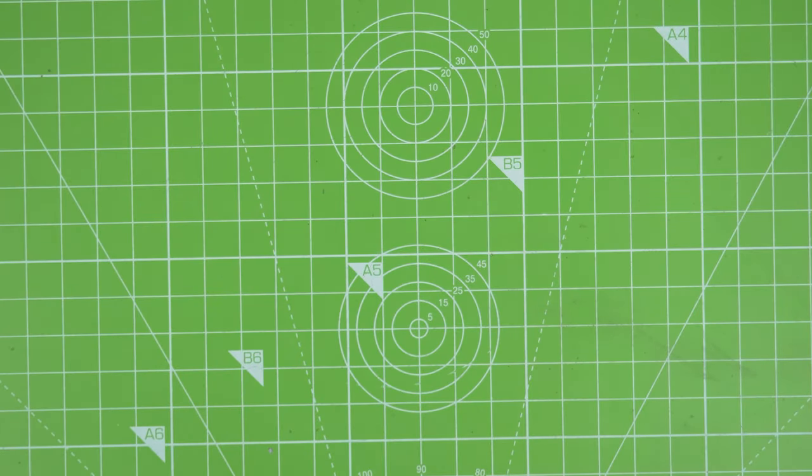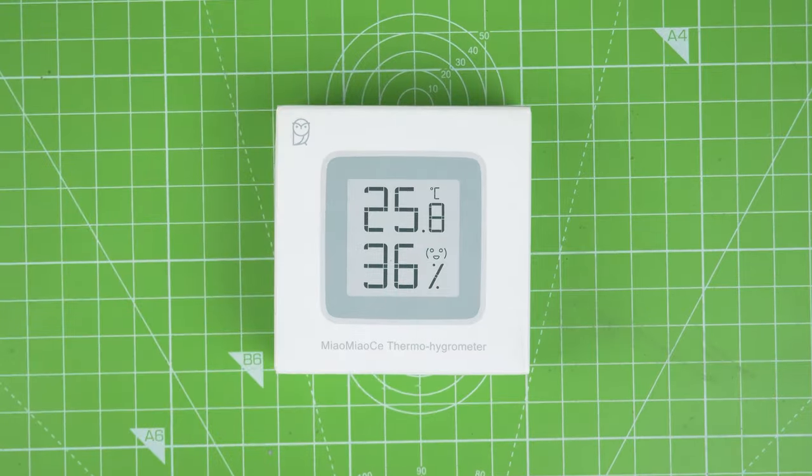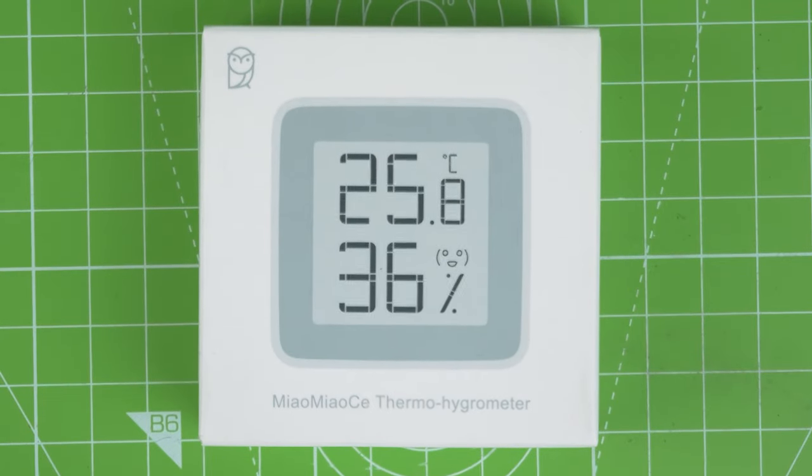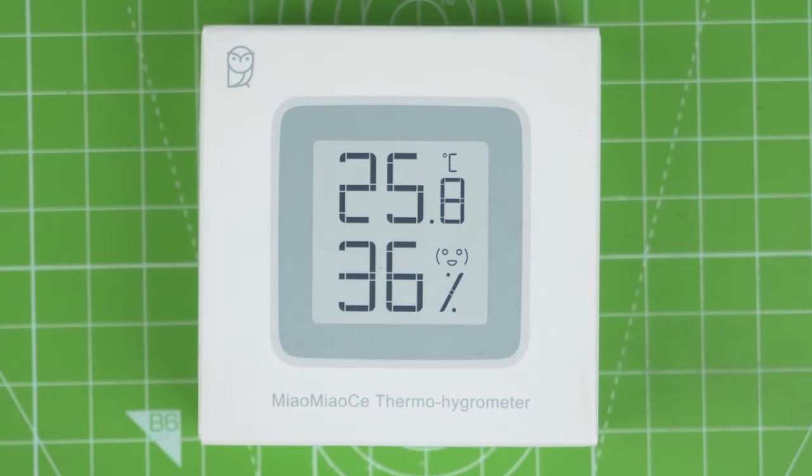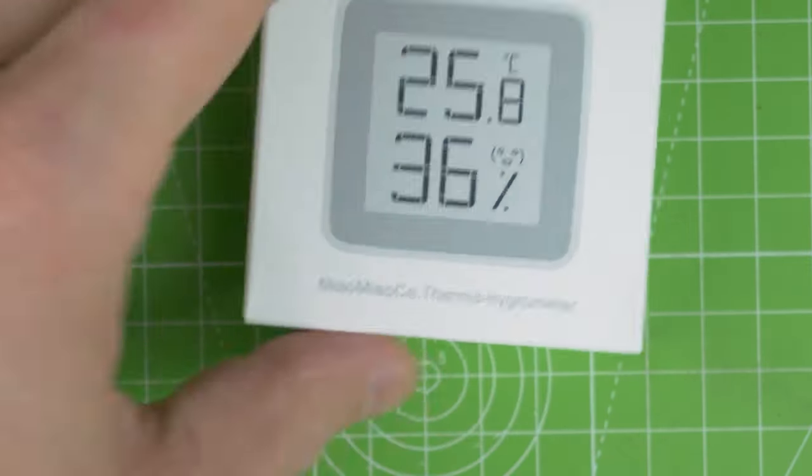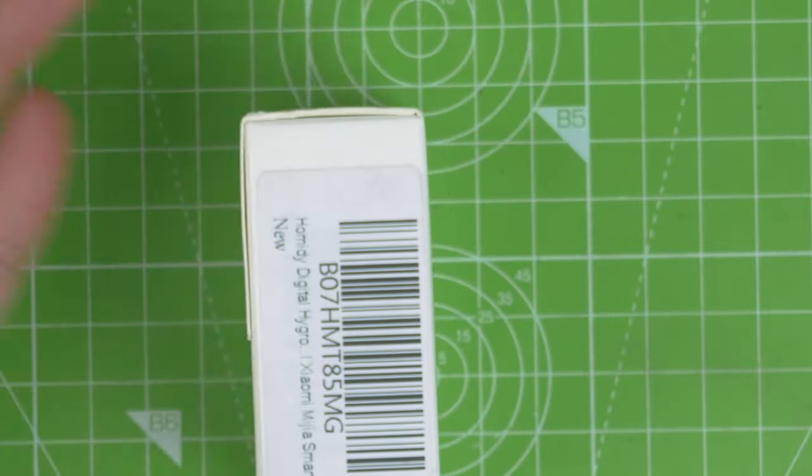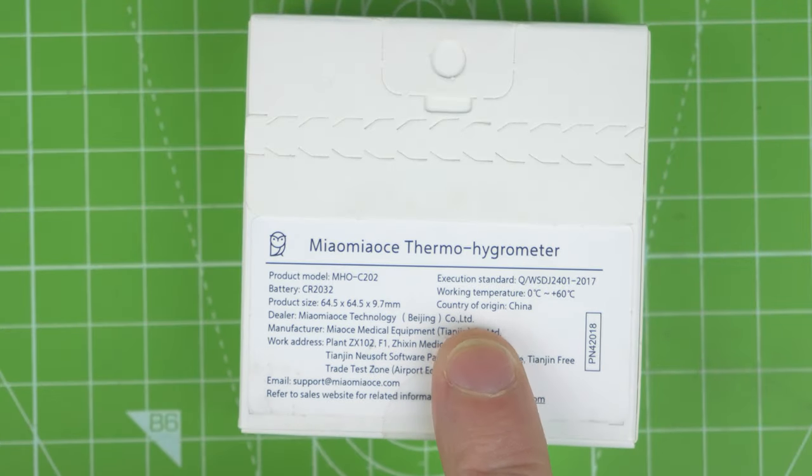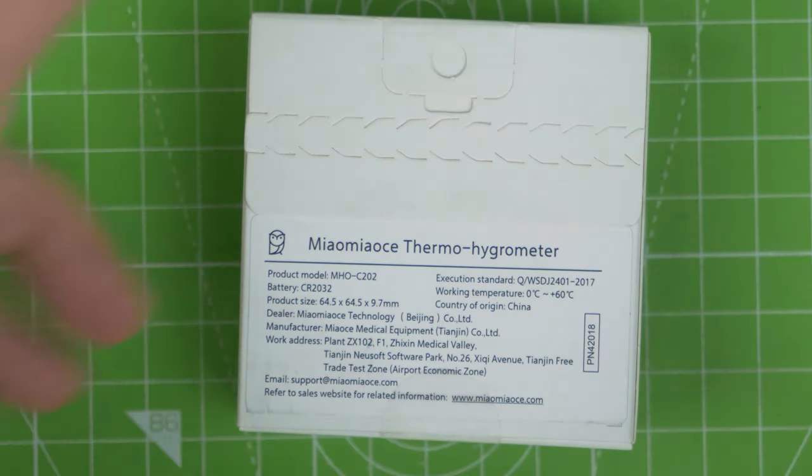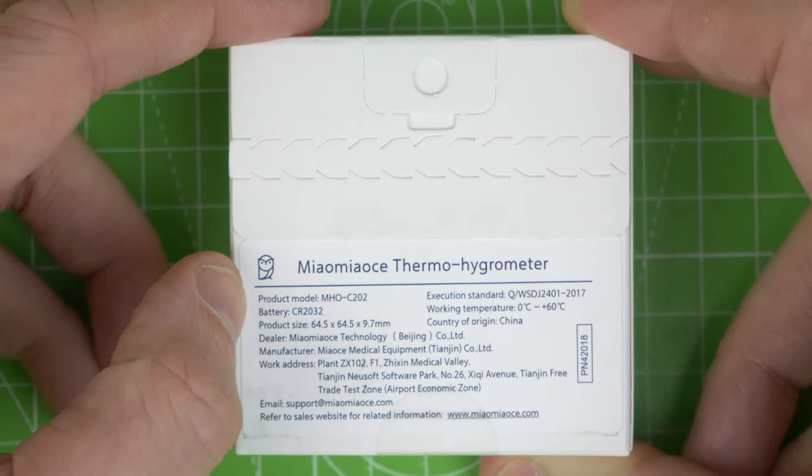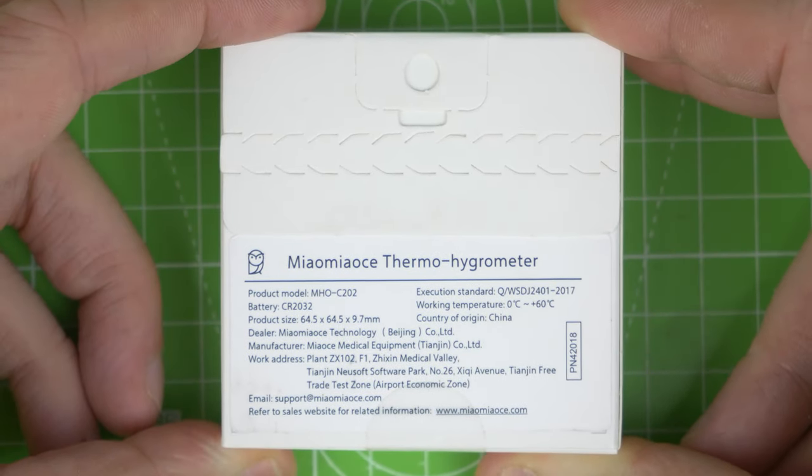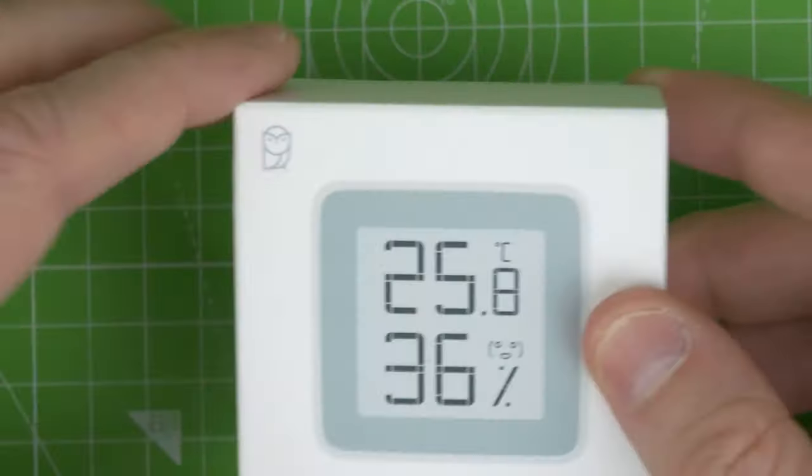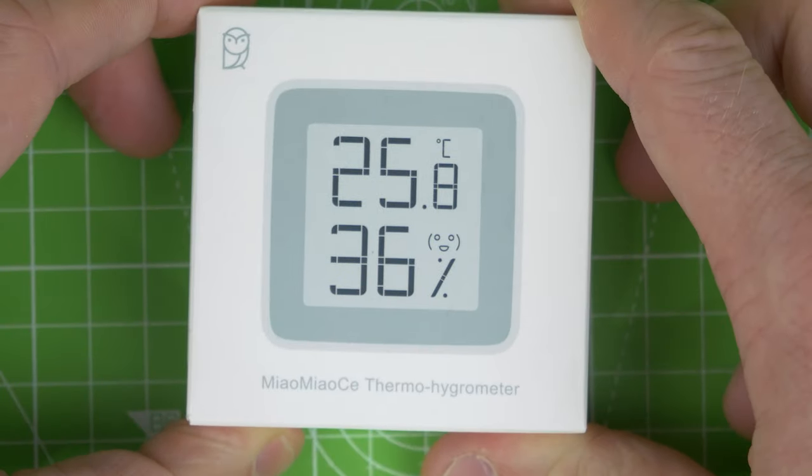Next up we have this little thing here. This is a temperature and humidity sensor, thermo-hygrometer. The interesting thing about this, I think this is a Xiaomi rip-off. It's powered by a CR2032 and that's one of the reasons I'm interested in it, because it's very low power. And you might wonder why it's super low power.